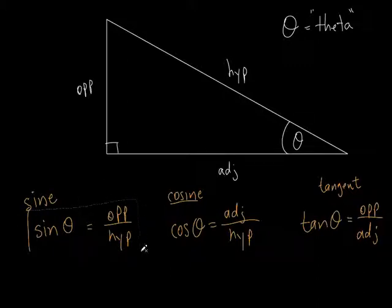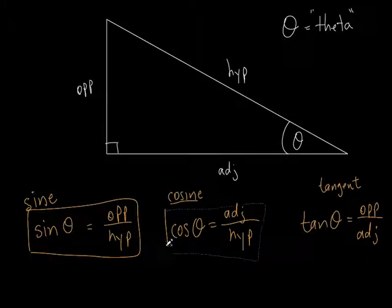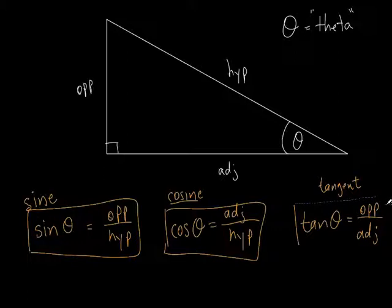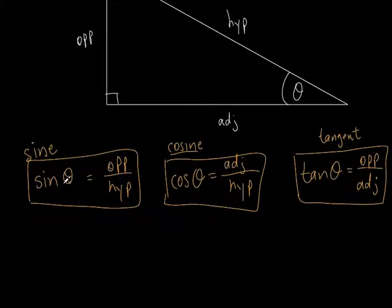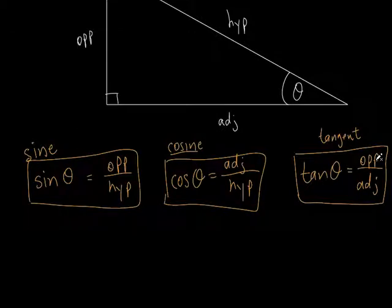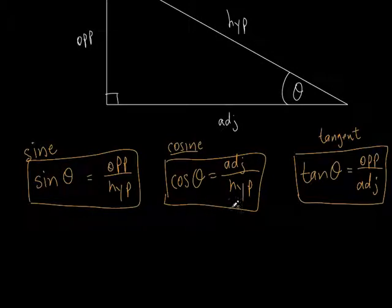Let's box all three of these — they're really, really important. We're going to use this throughout the rest of your math career, all the way through calculus and beyond. You're going to have to memorize that sine is opposite over hypotenuse, cosine is adjacent over hypotenuse, and tangent is opposite over adjacent. Where these words come from, I have no clue, but you can always Google it.